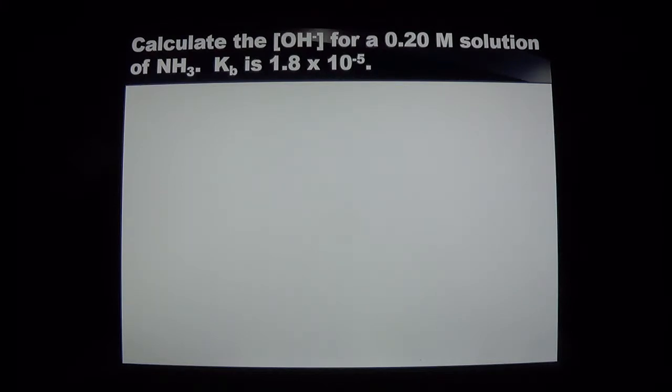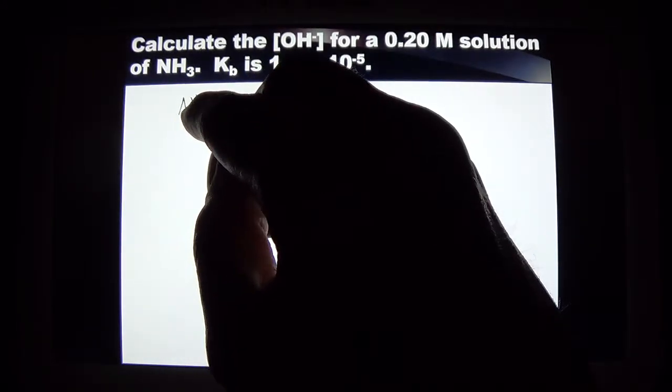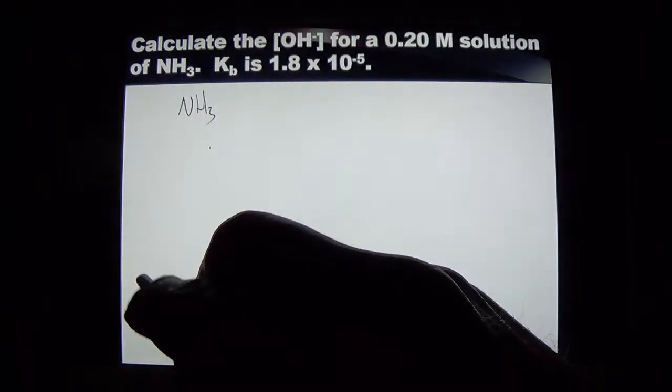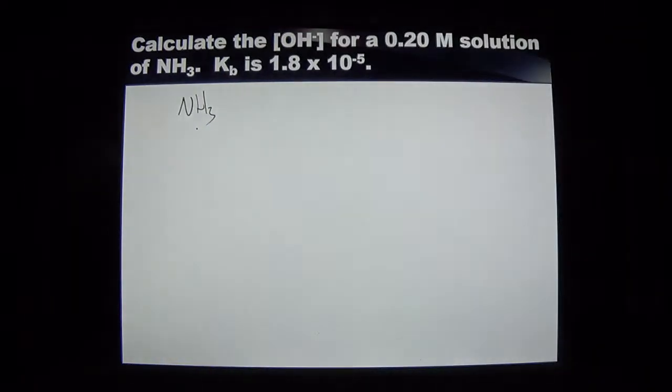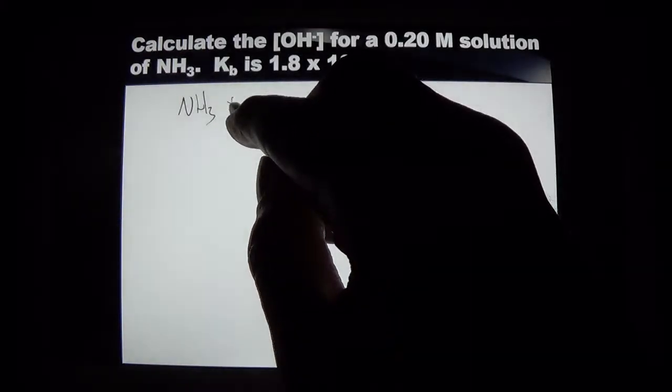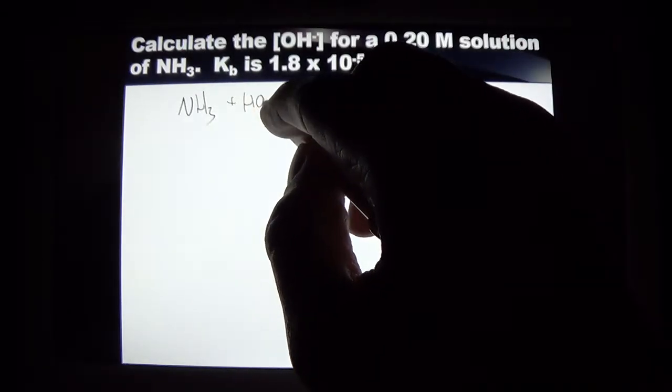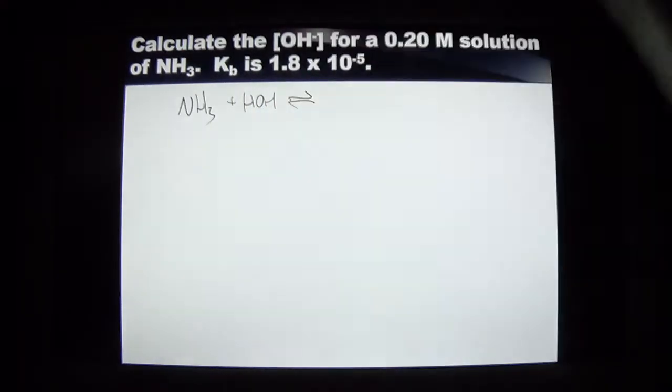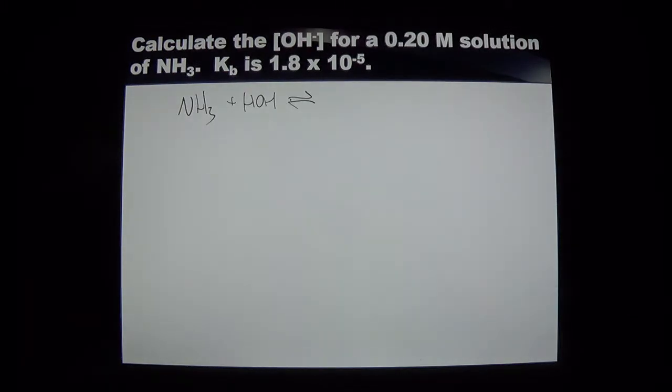So here's our question. Calculate the hydroxide concentration for 0.2 molar solution of ammonia. I'm not saying ammonia, I'm saying ammonia. That's what NH3 is. And they give me the Kb. So let's write my equation to focus. Now this is interesting. Ammonia is not an Arrhenius base where you have hydroxide that will ionize. Ammonia is a Bronsted-Lowry base where you're going to have the ability to accept a hydrogen from water or some other compound.